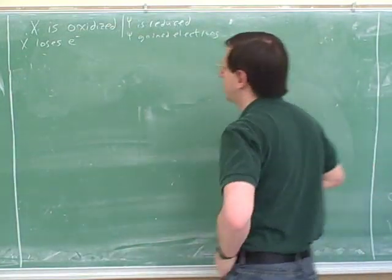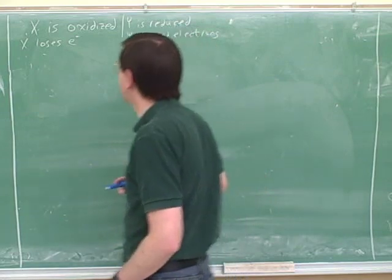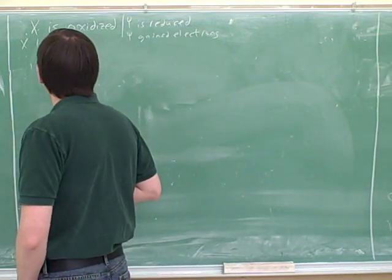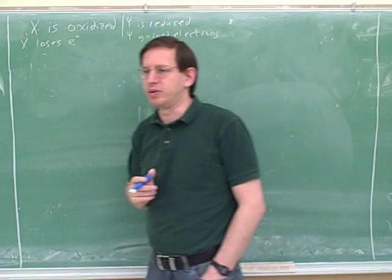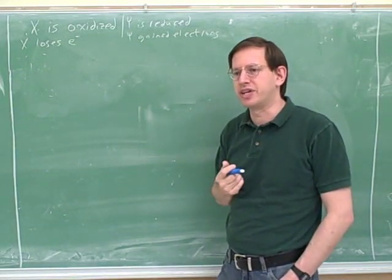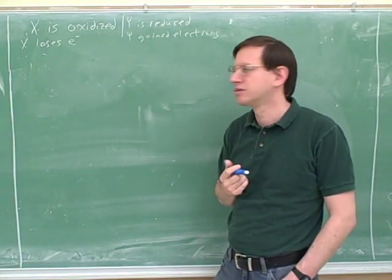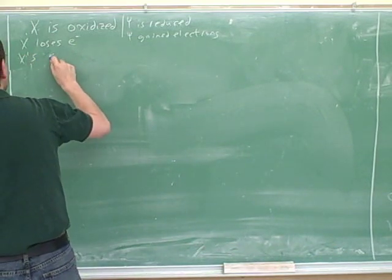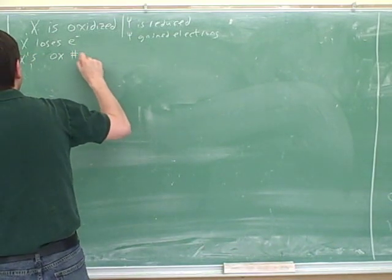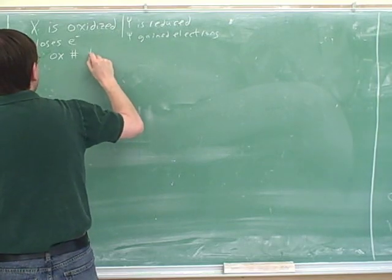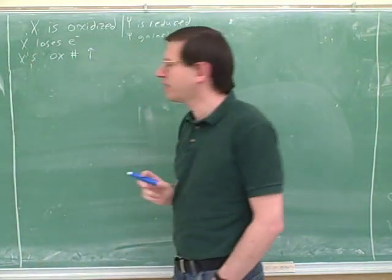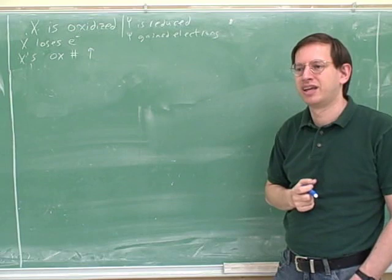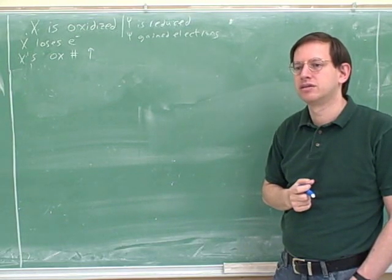So x lost electrons. Okay, good. What happened then to x's oxidation number? Did x's oxidation number go up or down? It goes up. How do you know that it went up? Because when you lose the electron, it gets more positive. Right, good.